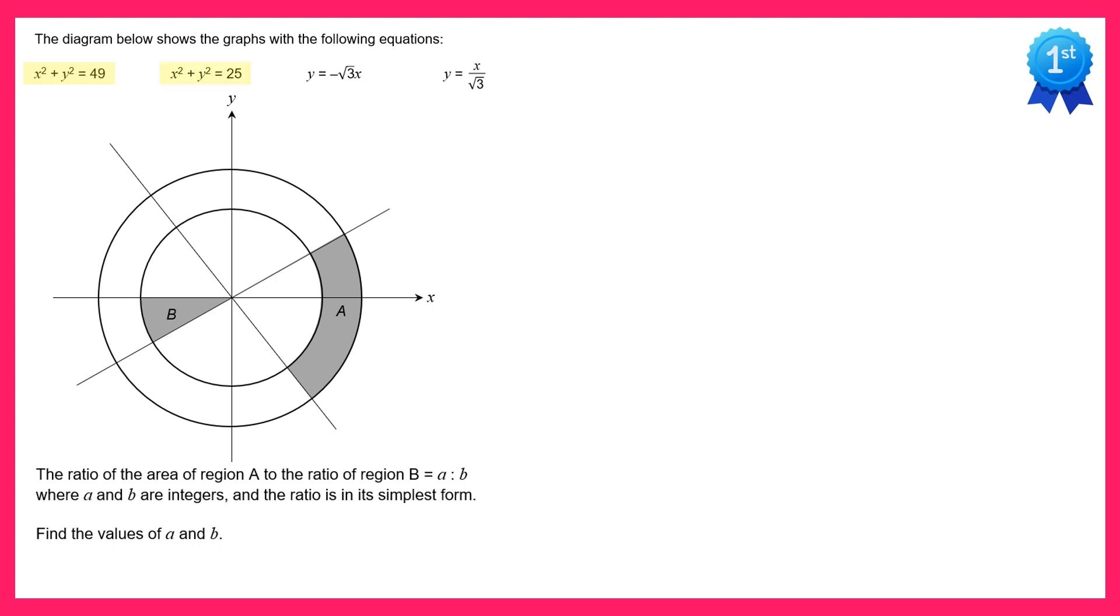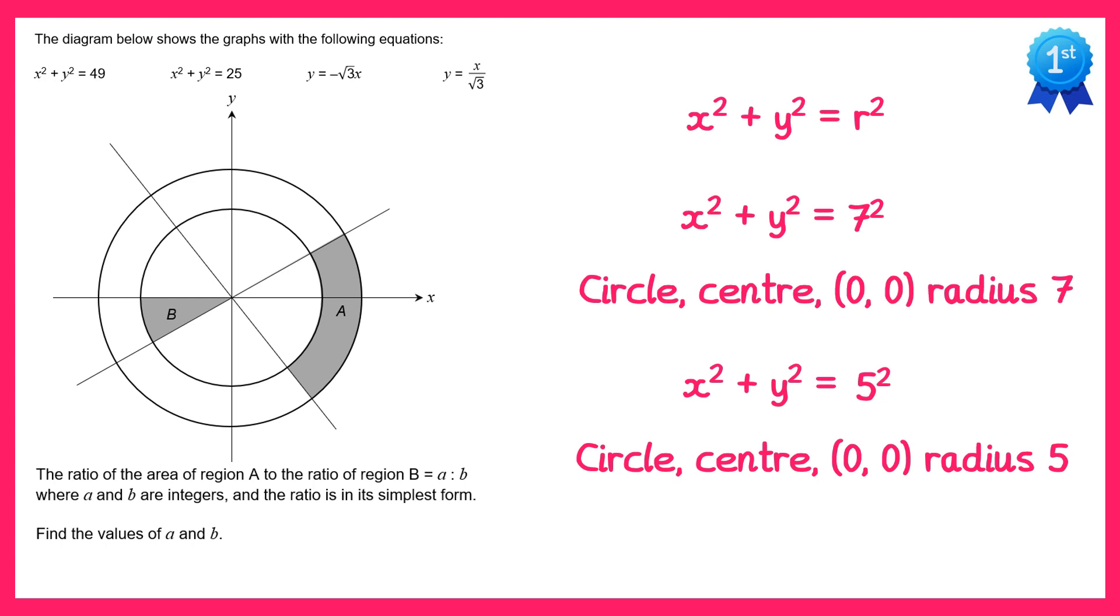You should know that x squared plus y squared equals r squared is a circle centered at the origin with radius r. We've got x squared plus y squared equals 49, which is 7 squared, so this is a circle center 0,0 with radius 7. We've also got x squared plus y squared equals 25, which is 5 squared, so that's a circle center 0,0 radius 5.